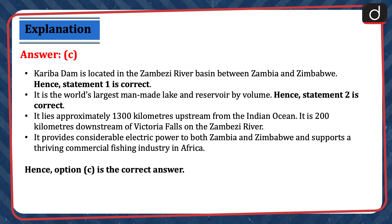Kariba Dam lies approximately 1,300 kilometers upstream from the Indian Ocean and is 200 kilometers downstream of Victoria Falls on the Zambezi River. It provides considerable electric power to both Zambia and Zimbabwe and supports a thriving commercial fishing industry in Africa. Hence, option C is the correct answer.